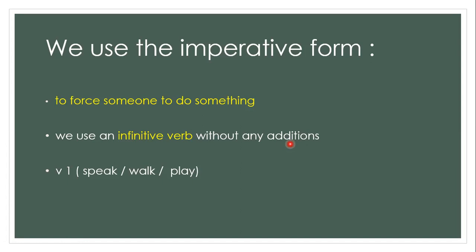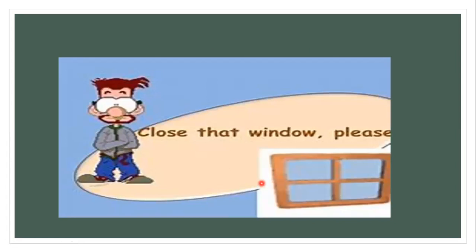What does 'without any addition' mean? For example, let's see the picture. We use 'please' — for example, 'Close that window please.' How did we form it? The first thing is that you don't have a subject like I, she, he, it, or they.